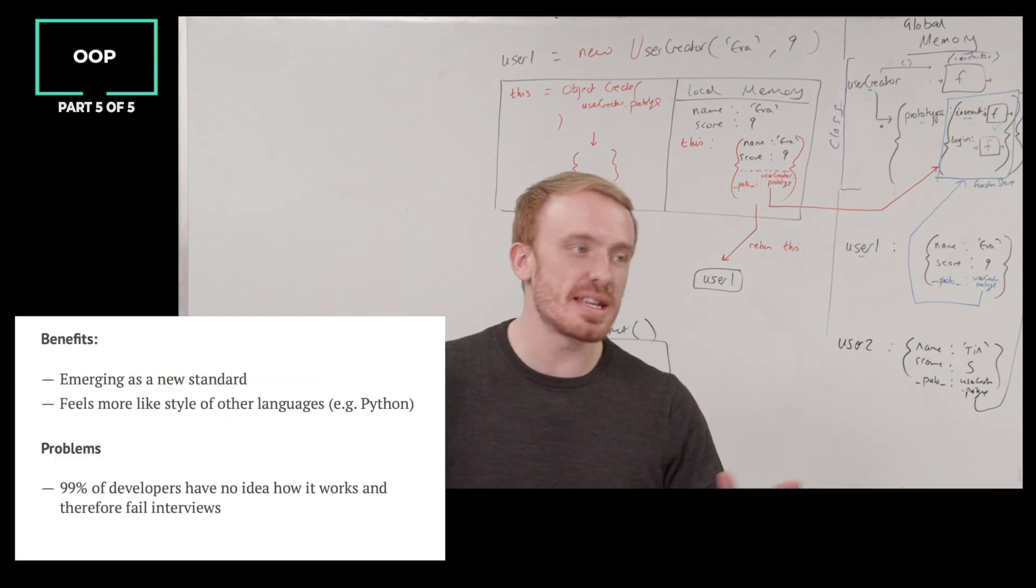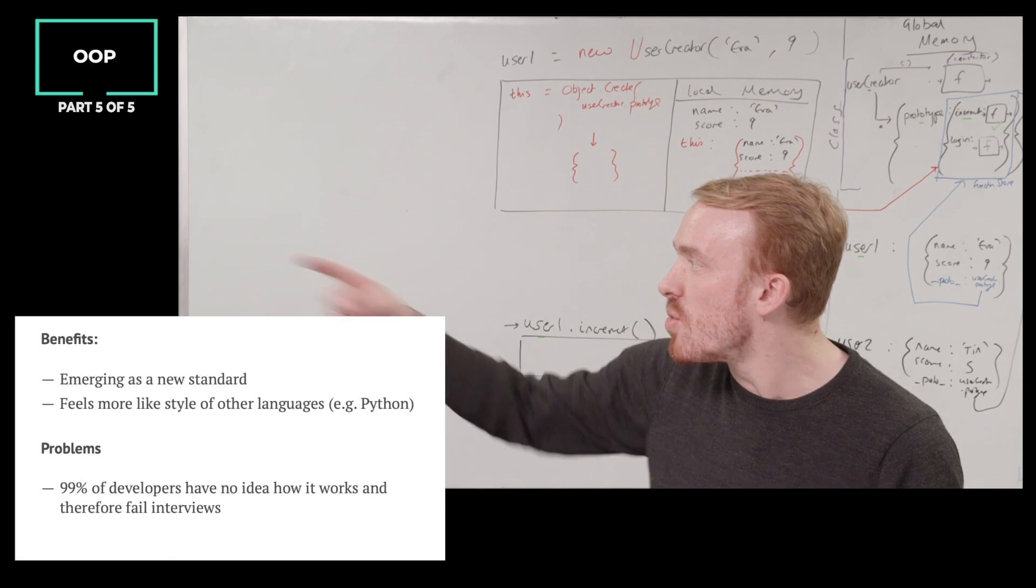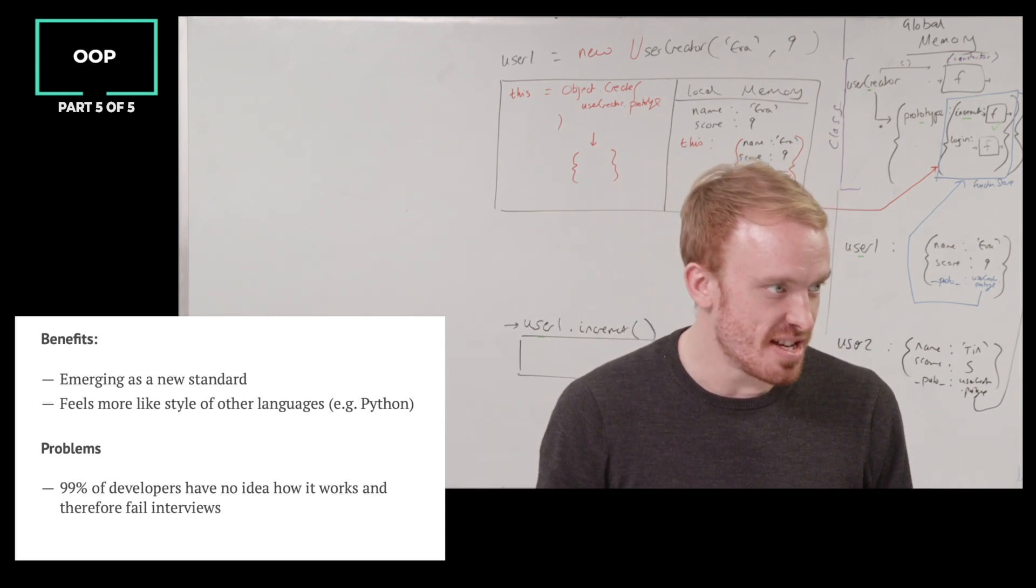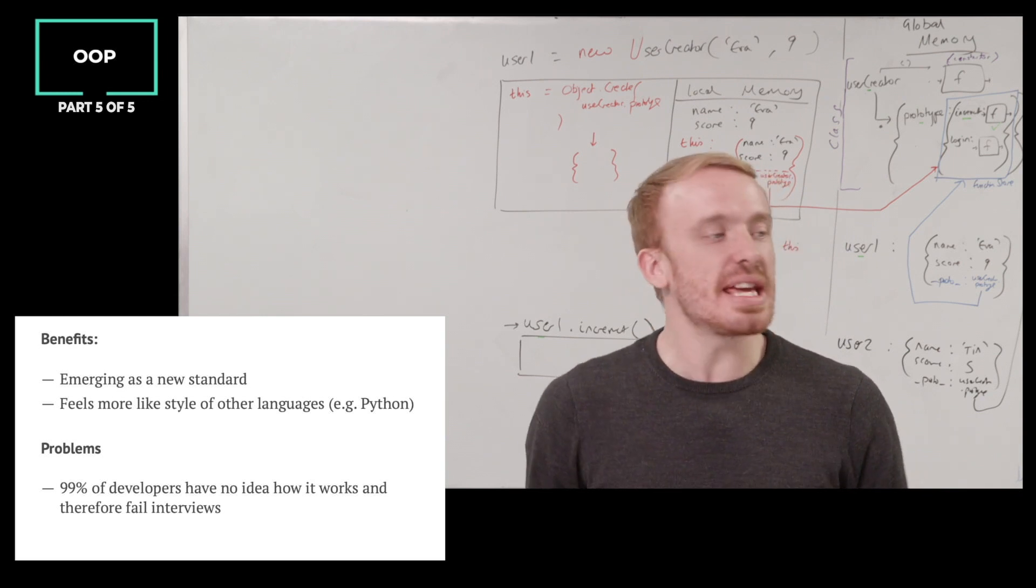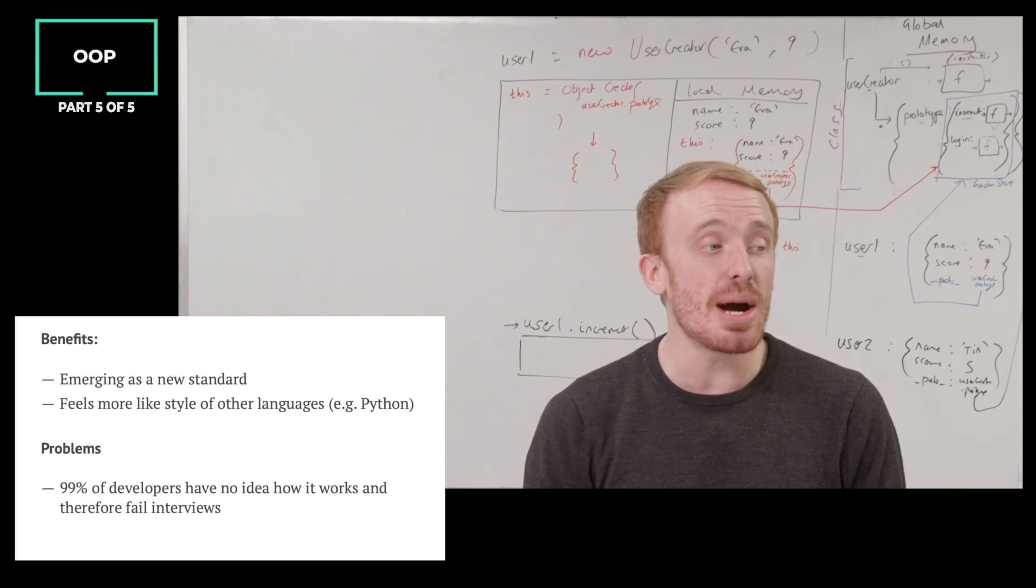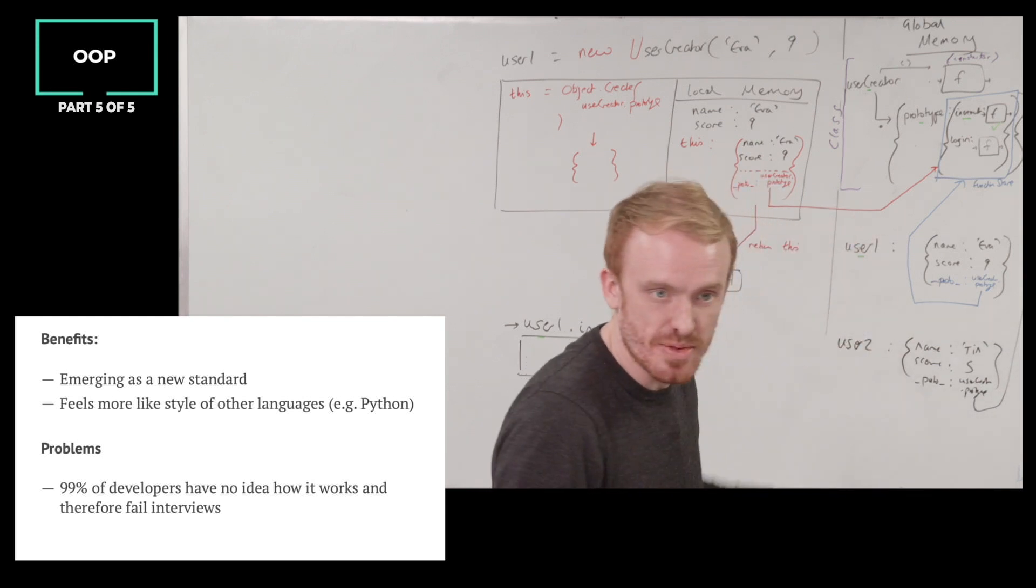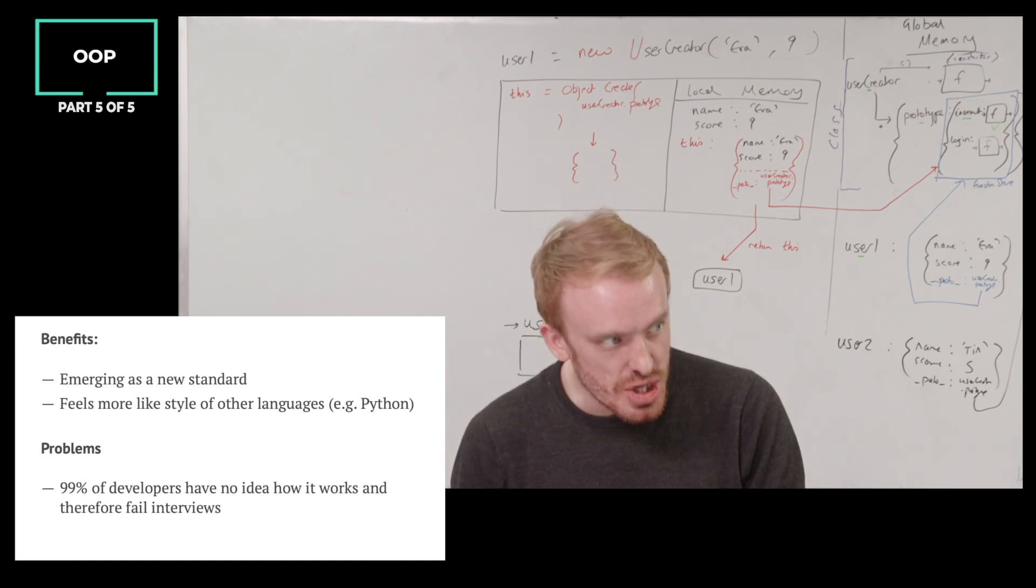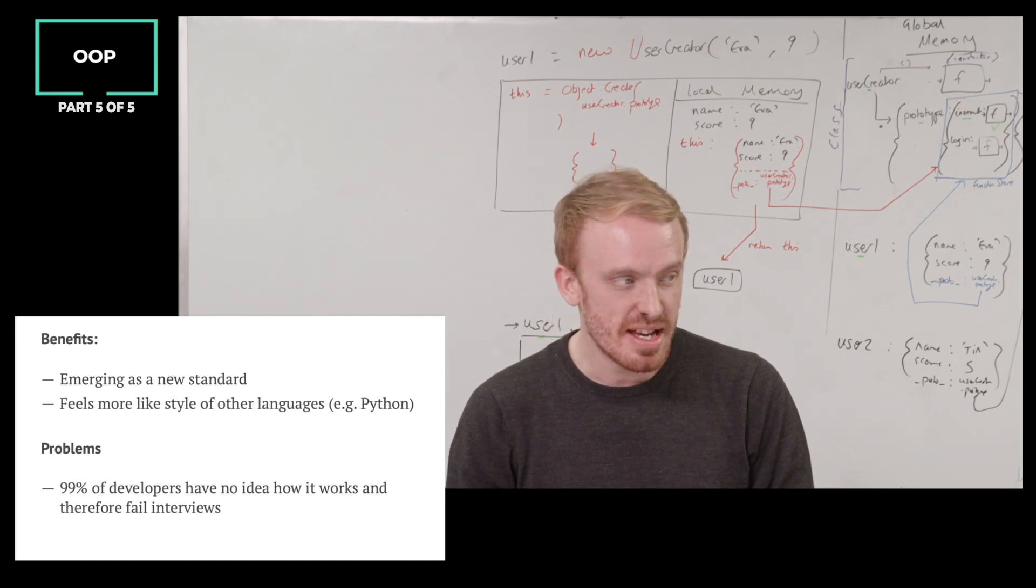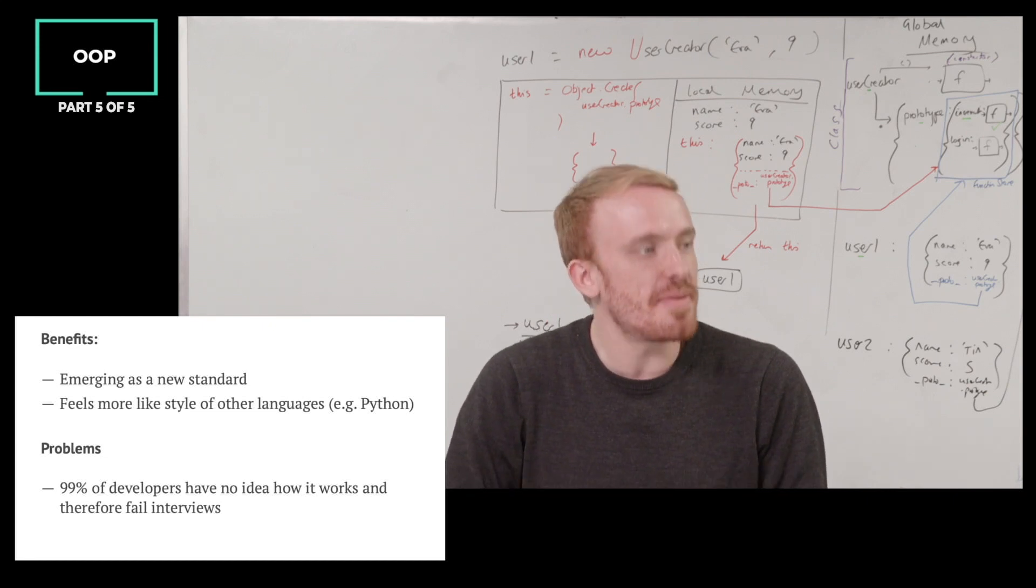So benefits emerging absolutely as our new standard. Feels more like the style of our language. This is almost identical to Python. And I don't love this. It's like, you know, not owning the fact that JavaScript is a very powerfully prototypal language. All this stuff under the hood is using the proto references. That's not how OOP is implemented in traditionally OOP languages, believe me. But I guess it makes it accessible, makes it feel similar.